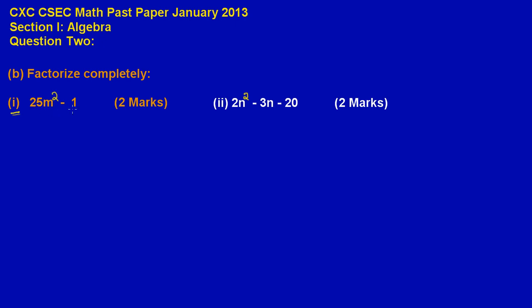I simply mean if you notice we have two terms here. The first term is 25m² and the second term is 1, minus 1. Now if you notice, 25 is a square term because you have to multiply 5 times 5 which equals 25.